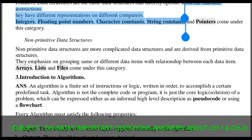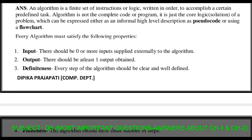The third question from chapter one is the introduction to algorithm. An algorithm is a finite set of instructions or logic written in order to accomplish a certain predefined task. An algorithm is nothing but a solution given in a standard step-by-step manner. It is not a complete code or program — it is just the core logic of a solution, which can be expressed as an informal high-level description, pseudocode, or using a flowchart. Every algorithm must satisfy the following properties: input, output, and definiteness.